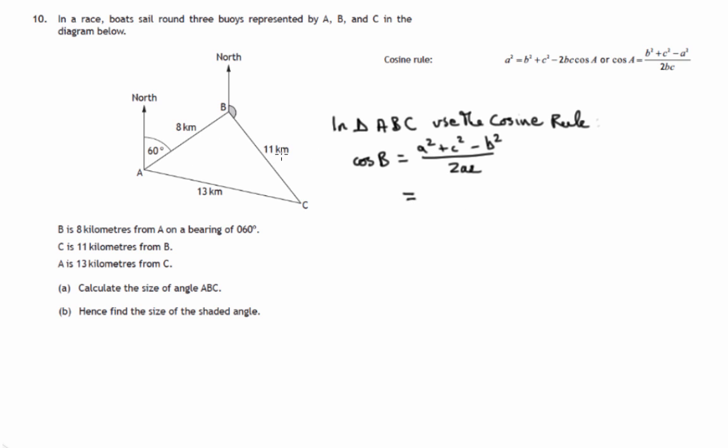little a, remember the side opposite angle A is little a, the side opposite angle C is little c, and the side opposite angle B is little b. So that's the labels that we're using. So little a is 11, little c is 8, and little b is 13.